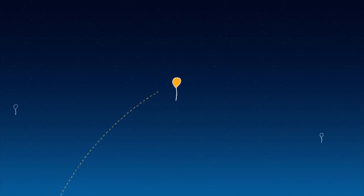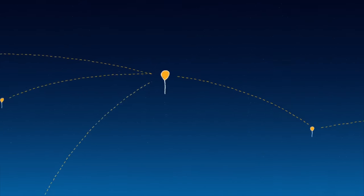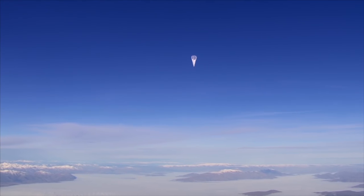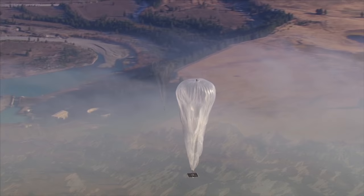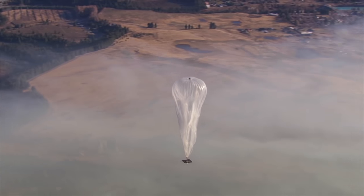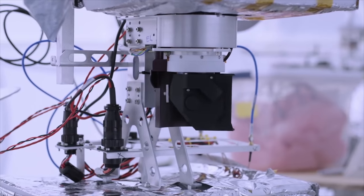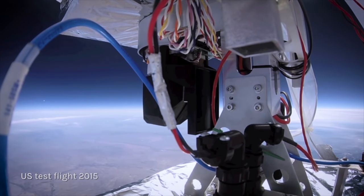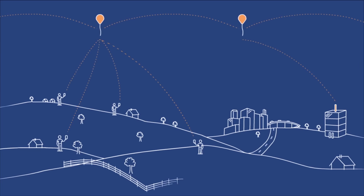To bring connectivity to all devices in a particular location, all that is required is one balloon to establish connection with the ground station, which then propagates through the balloon network. For example, a connection to a base station in wealthier parts of Africa, such as Johannesburg, will be able to provide connection to the majority of Africa through the Loon network. To propagate the signal, the balloons — often a few hundred kilometers apart — aim precisely at each other through the use of laser technology. The signal can then be sent to individual devices or even residences by connecting to Google's small cell device.